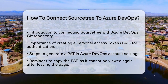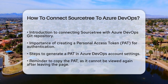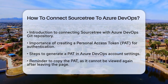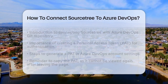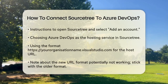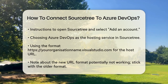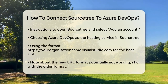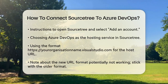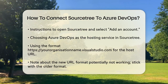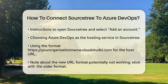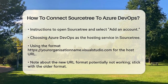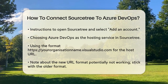Next, open SourceTree and go to the Add an Account option. Here, you'll select Azure DevOps as the hosting service. For the host URL, use the format https://yourorganizationname.visualstudio.com. It's important to note that the new URL format for Azure DevOps might not work, so stick with the older format.